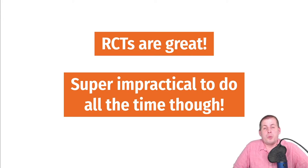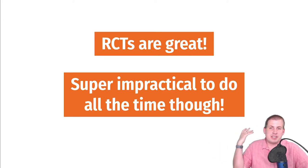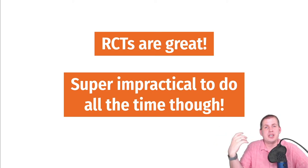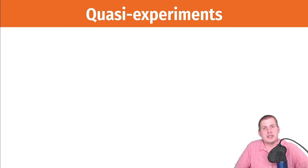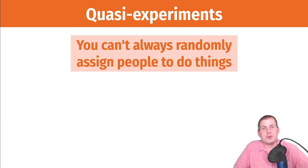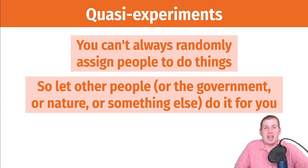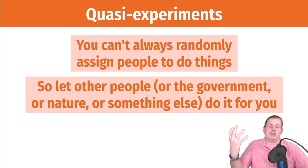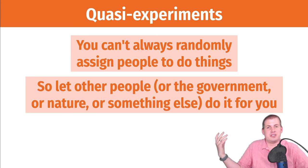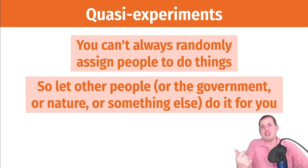So what the causal inference world does instead of relying on randomized controlled trials is turn to something called a quasi-experiment — something that is like an experiment but not quite. The official definition is basically: instead of randomly assigning people yourself, you let other people, the government, or nature do it for you. For example, hurricane evacuations can be treated as a quasi-experiment — you can see what happens when people evacuate to one state versus another.